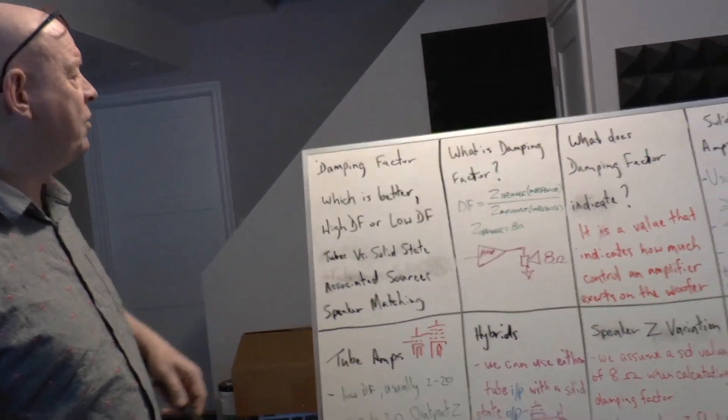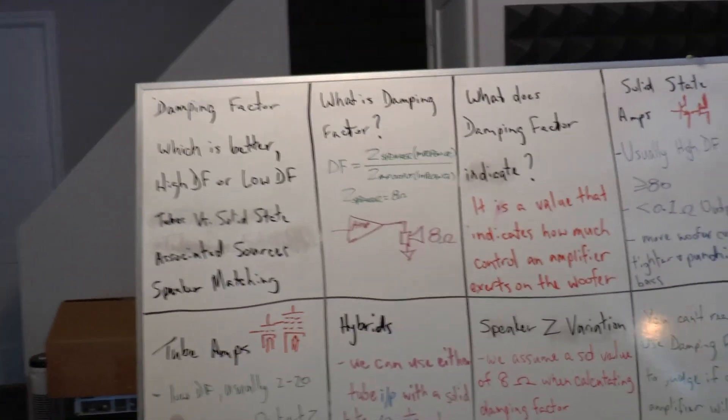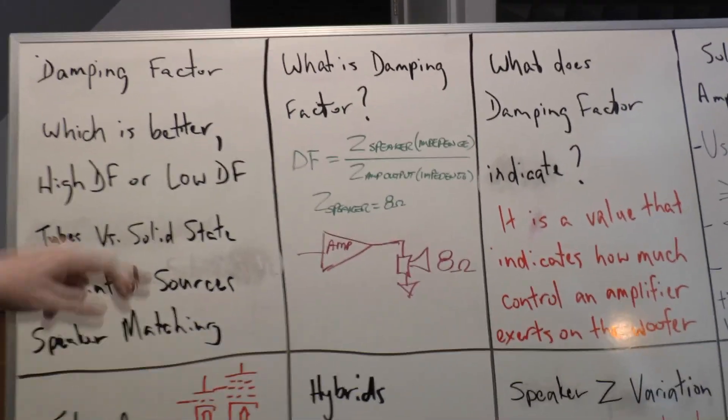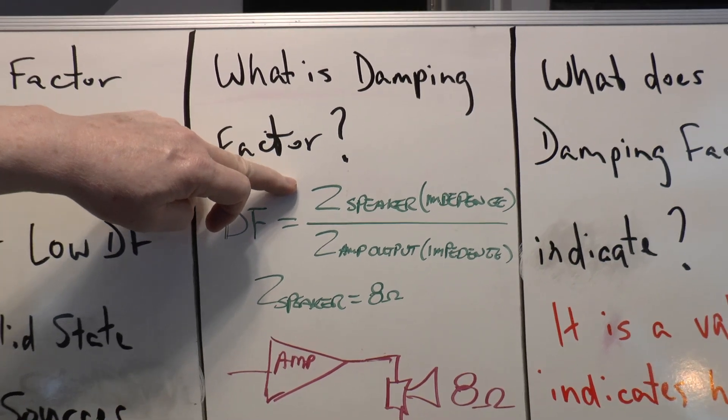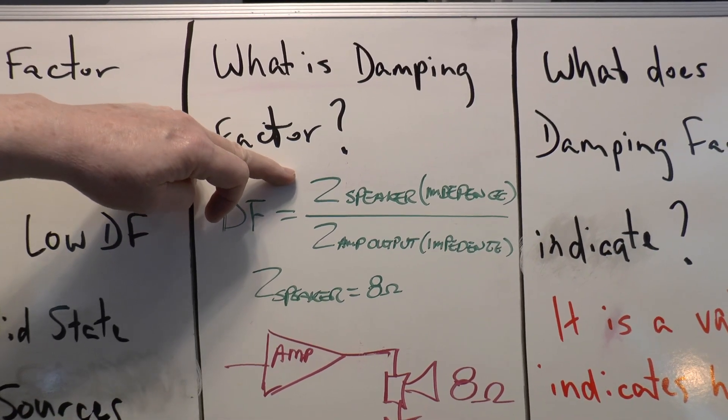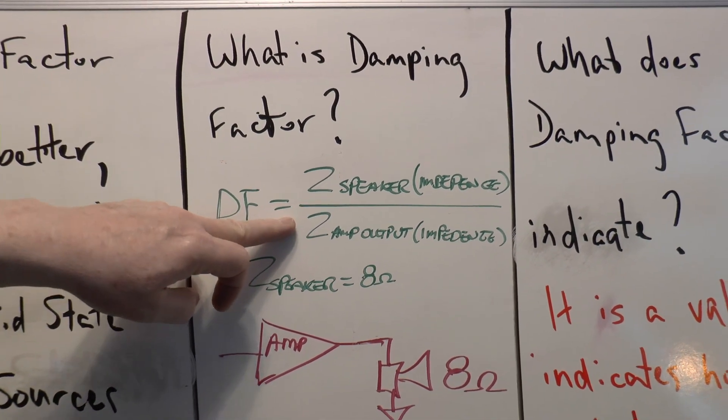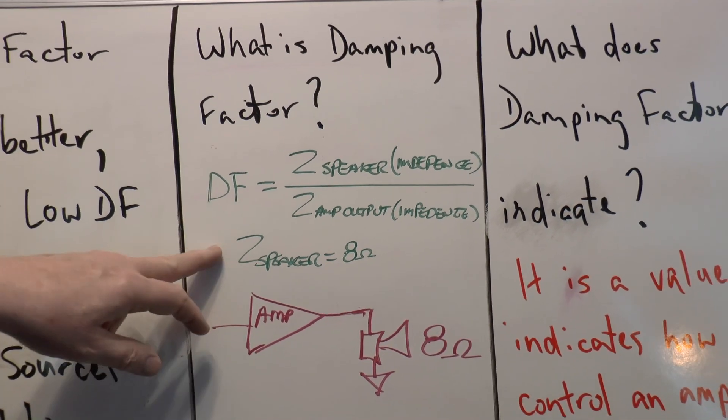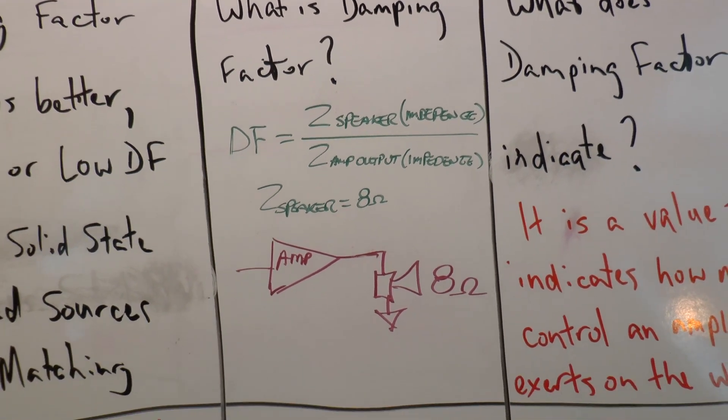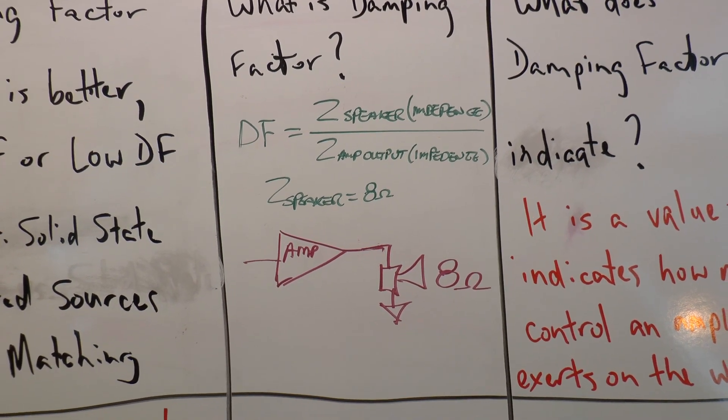First of all, what is damping factor? Damping factor is actually a measurement. It's a ratio—it's the impedance of the speaker divided by the impedance of the amplifier output. We assume that the speaker impedance is 8 ohms; we use that as a constant.